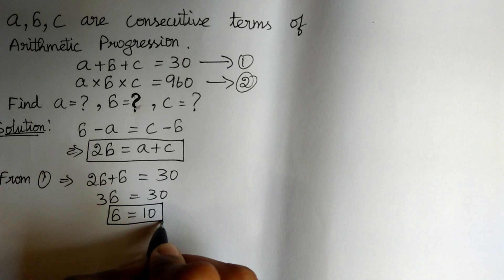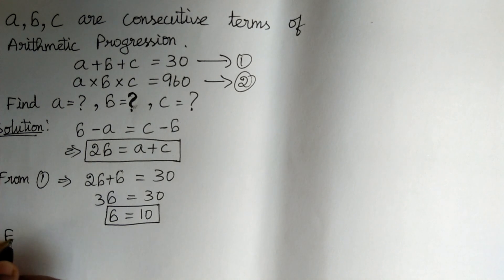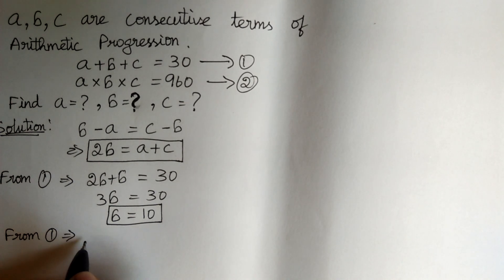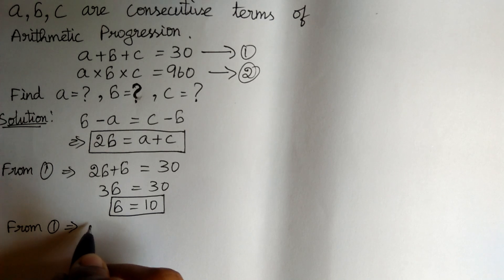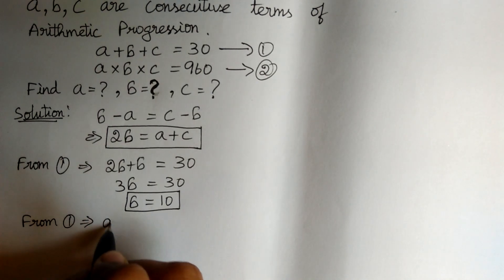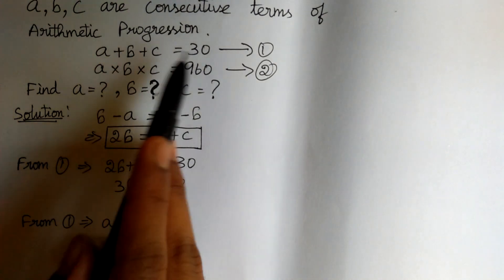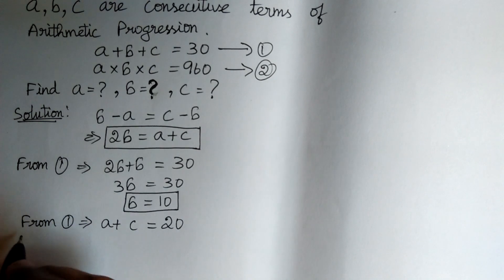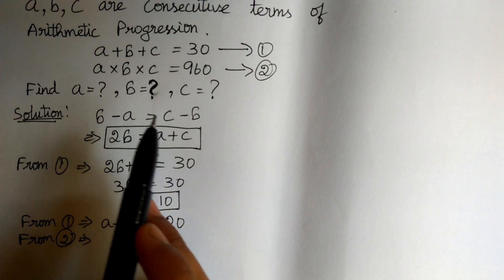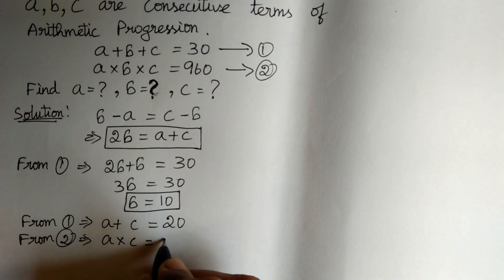Now we got the value of B. Substituting B equals 10 in equation 1, we get A plus C is equal to 20. That is, 30 minus 10 equals 20. From equation 2, we get A into C is equal to 960 divided by 10, which is 96.